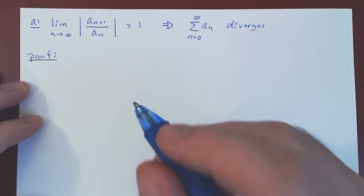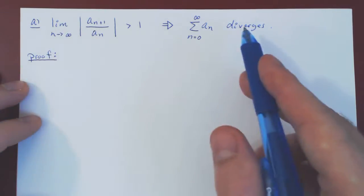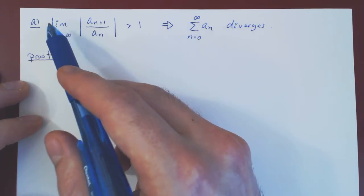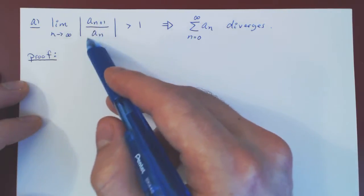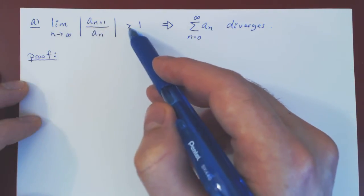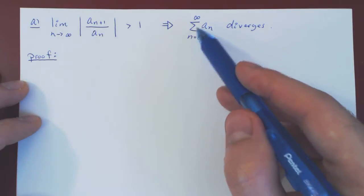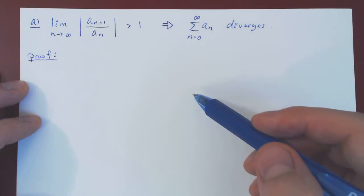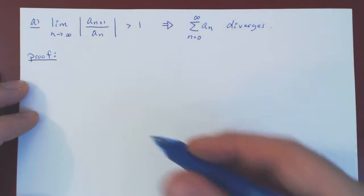In this video we will prove part A of the ratio test. Part A states that if the limit as n tends to infinity of |a_{n+1} / a_n| is strictly larger than 1, then the series of a_n from 0 to infinity diverges. So let's prove that this is correct.